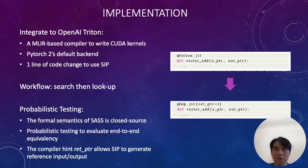As the formal semantics of SASS is closed source, we have to rely on probabilistic testing as an approximation to measure transformation correctness. The user must give a compiler hint which indicates the index of the output buffer. SIP then intercepts this hint and generates reference output and input upfront. The mutated SASS is tested with the reference input and output and will be rejected if there is a mismatch.